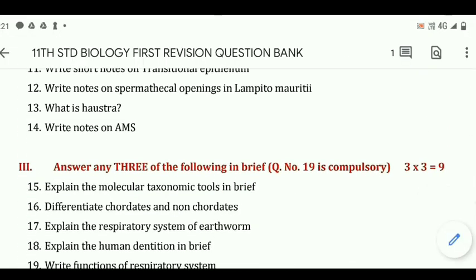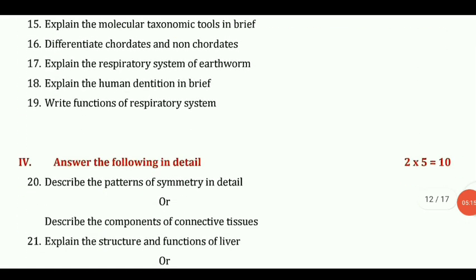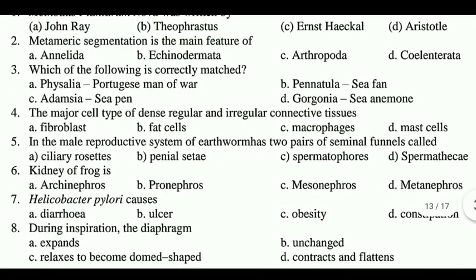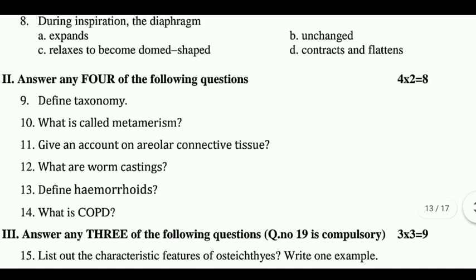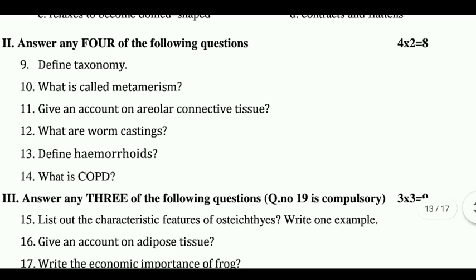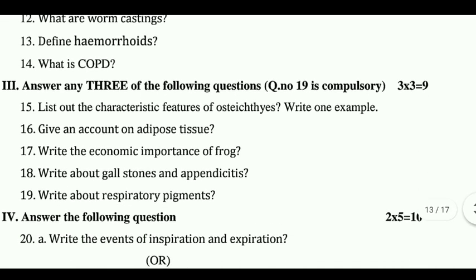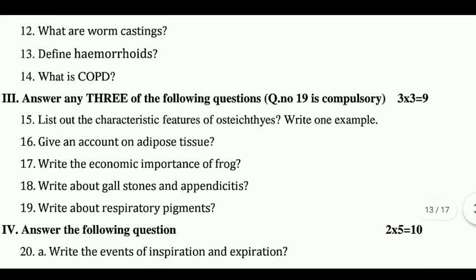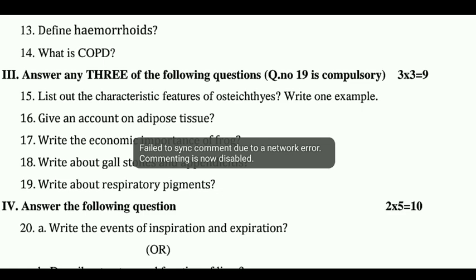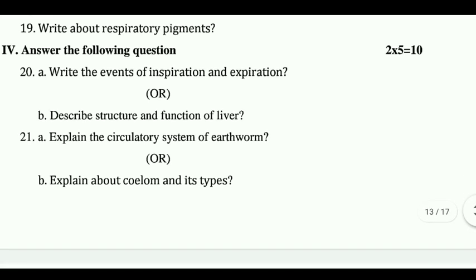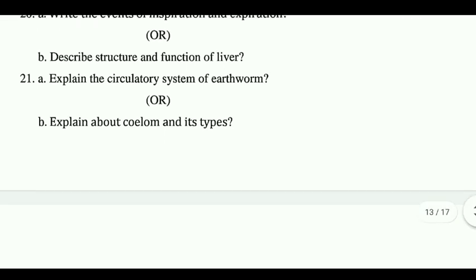You can download all the PDF links in the description. So the pre-revision exam: taxonomy question, give account of areolar connective tissue, earthworm casting, COPD, write about the respiratory pigments, write economic importance of frog, give account of adipose tissues, write the events of inspiration and expiration, describe the structure and configuration of liver, explain the excretory system of earthworm, explain about the coelom and its types.